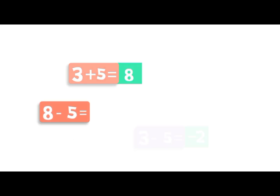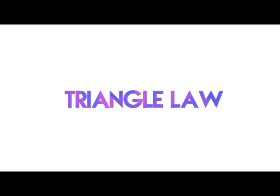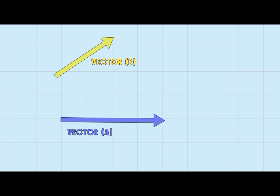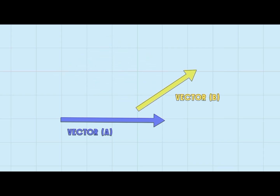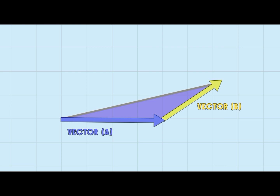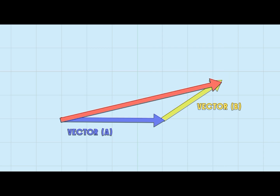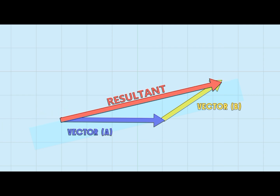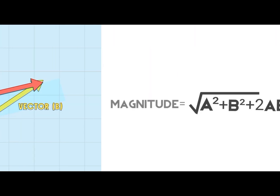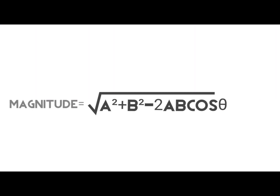Just like how scalars can be added and subtracted, vectors can be too, and there are laws for it. One of them is the triangle law of vector addition. Suppose you have two vectors, vector A and vector B. To add them, take the tail of vector B and place it at the tip of vector A. The third side of the so-formed triangle gives you the sum — the resultant. To find the magnitude, you can use this formula, and use a minus sign for subtraction.